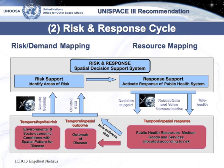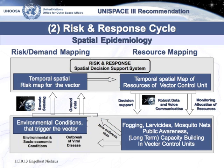Space technology can be helpful in many ways in this cycle — first of all, remote sensing, robust voice communication on the response side, or tracking resources by a global positioning system. For spatial epidemiology, the risk and response cycle means we identify the temporal-spatial risk of a disease vector. For example, a mosquito: remote sensing can help identify environmental conditions that trigger these vectors. On the response side, the temporal-spatial map of resources can help identify fogging, larvicide application, mosquito nets, public awareness strategies, and capacity building programs for vector control units or social workers in an area suffering from a vector-borne disease.